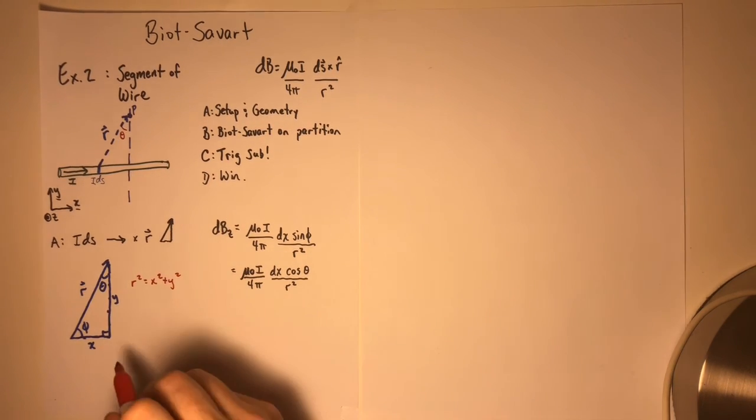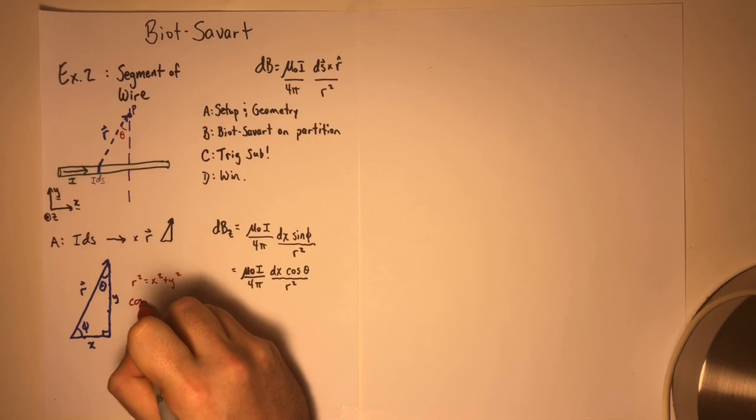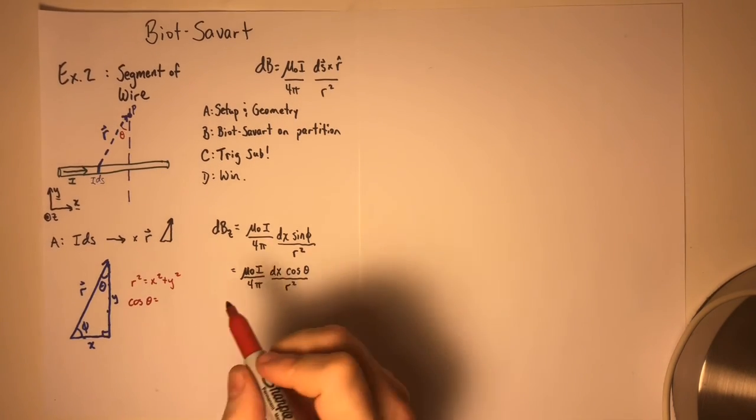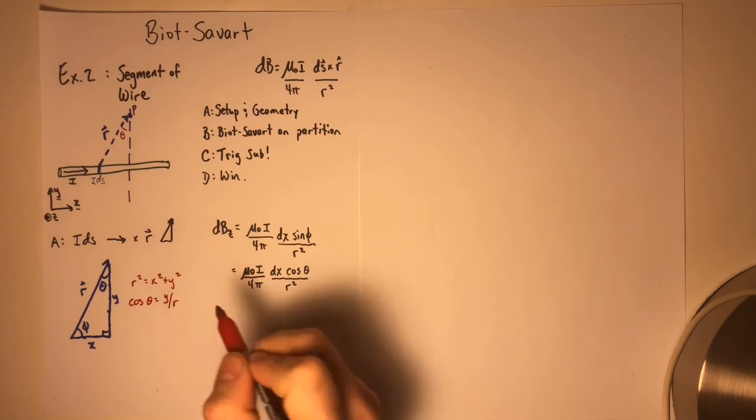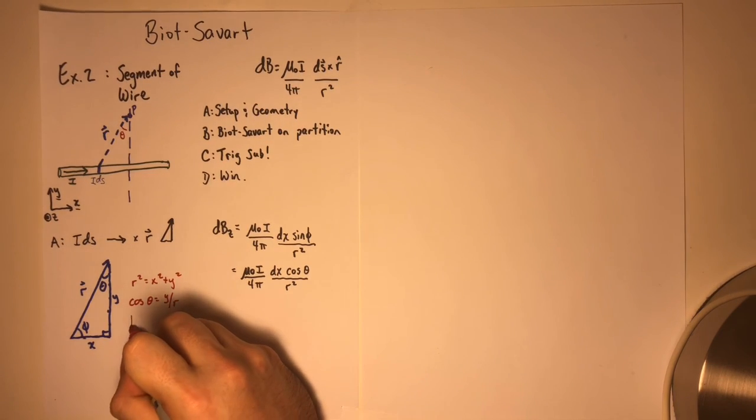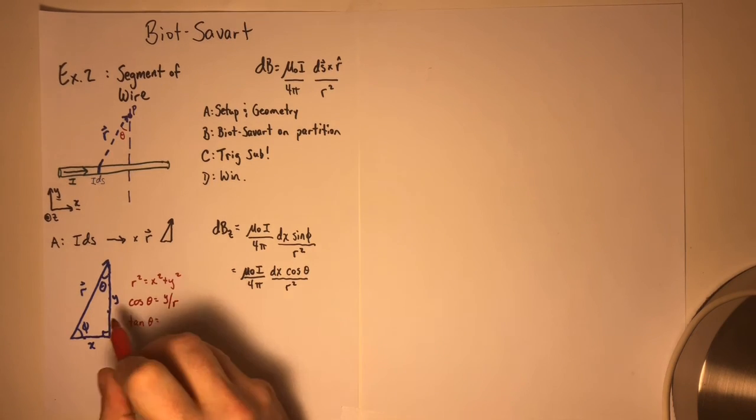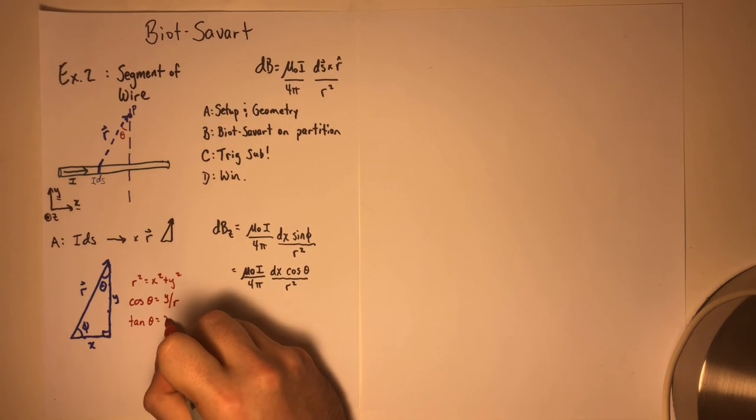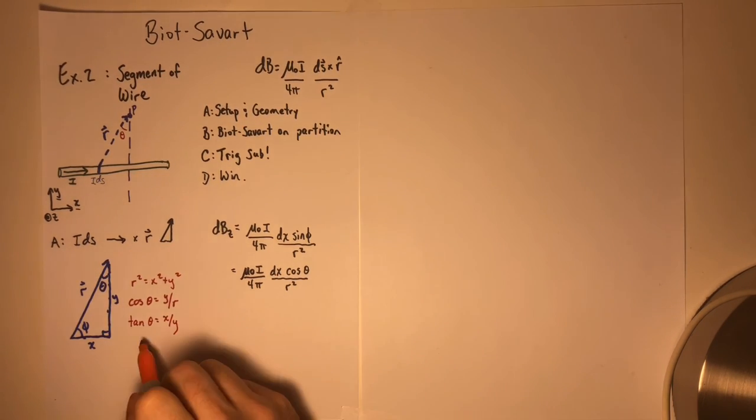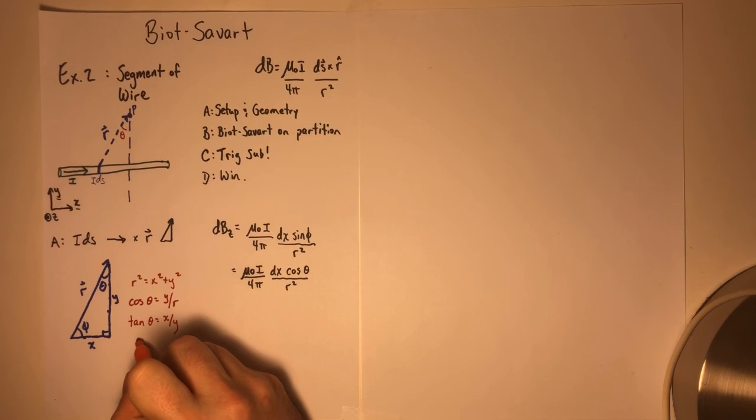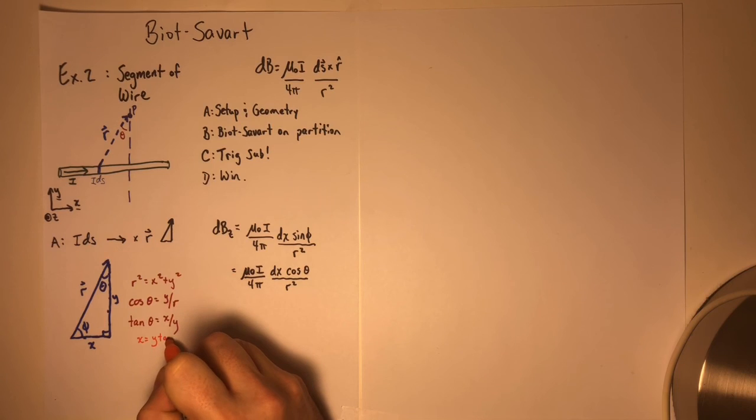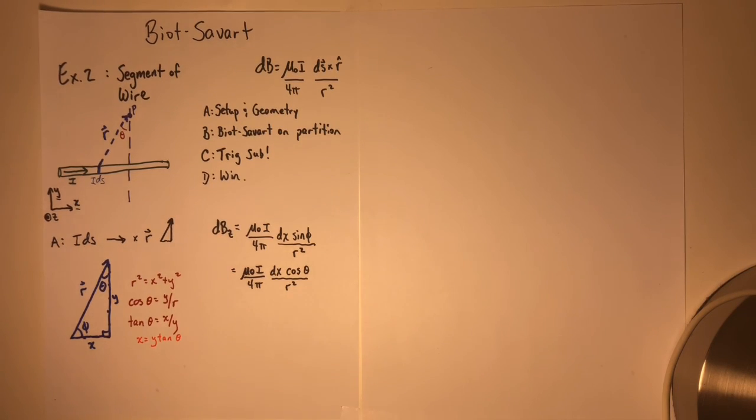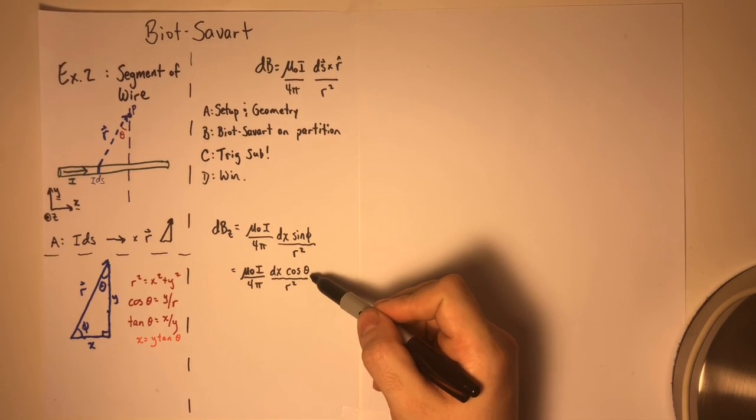So we have R squared equals X squared plus Y squared, as usual, Pythagorean theorem. We have cosine theta equals adjacent over hypotenuse. And because it will turn out to be useful later, we have tan theta equals opposite over adjacent X over Y. A slight rewrite of this gives us X equals Y tan theta.